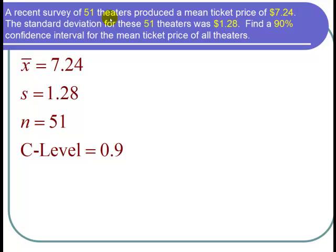We have 51 theaters that were surveyed, so n is 51, and we want a 90% confidence interval. The calculator calls that the C-level. So C-level equals 0.9.